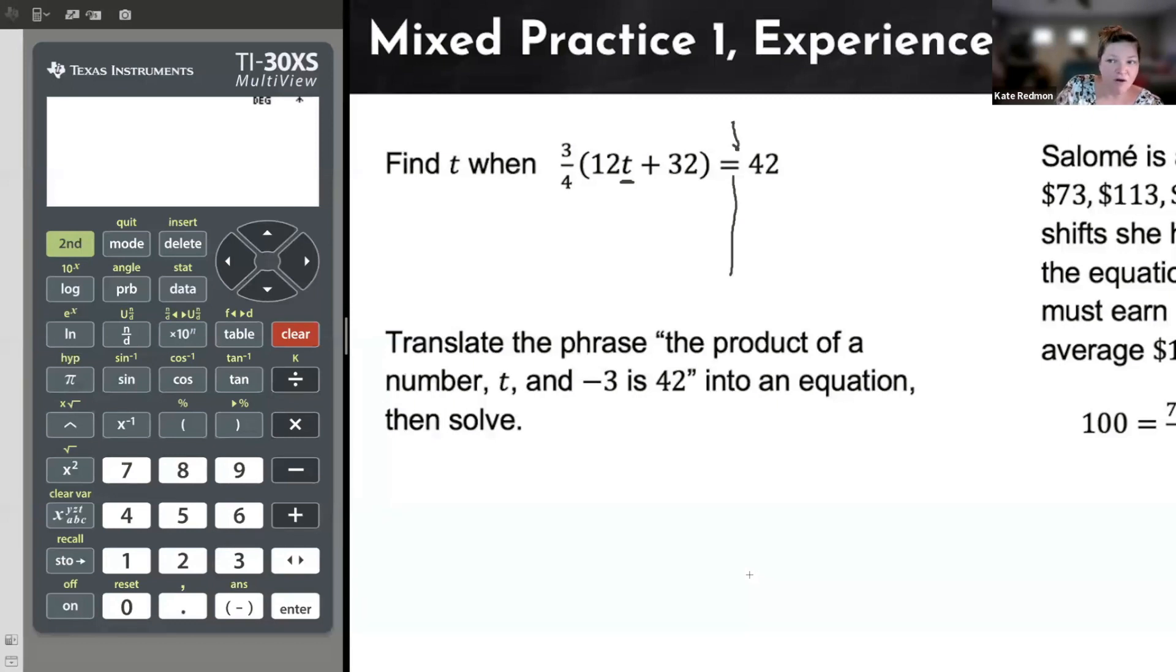But I know that there's some of you who have learned to multiply through a grouping already. You know, you're in the advanced class, and so I'll do it that way next. But I'm going to get the same answer either way. So first, let's try by getting rid of the 3/4.